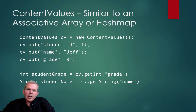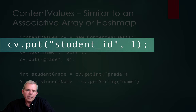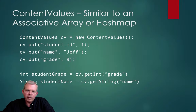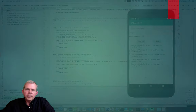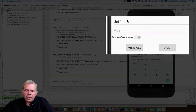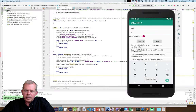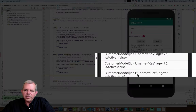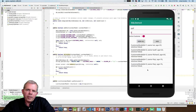We're going to work with something called content values — it's like an associative array or hash map where you put key-value pairs. For example, if I want to put 1 for the student ID, Jeff for the name, and grade 9, you just do it like this. When you insert into the database, it can automatically see the column name associated with its value. Here's what the app will look like when done — if I choose View All I get everybody, if I add somebody called Jeff, age 7, active customer, it says successfully added and he shows up as person number 12. If I click him, it deletes him.